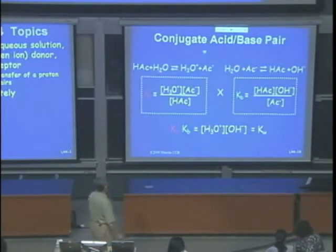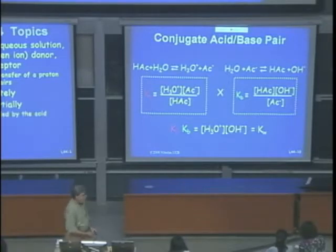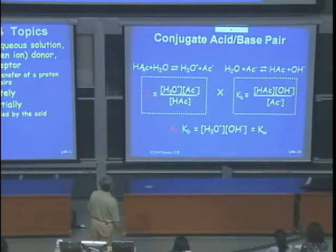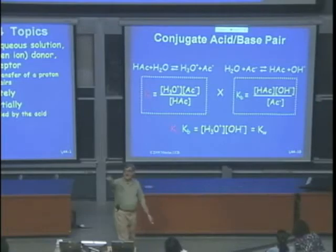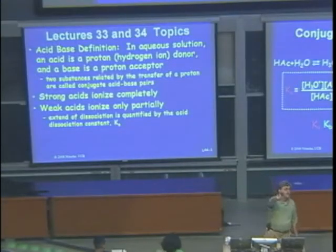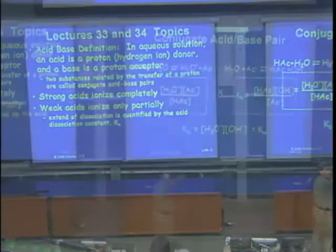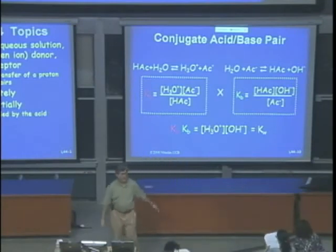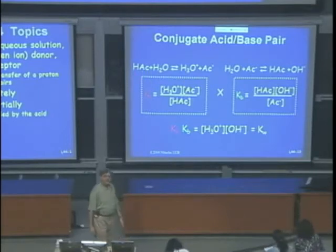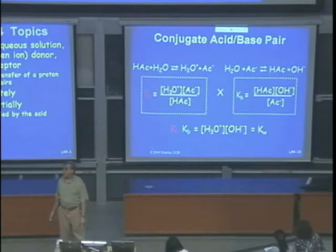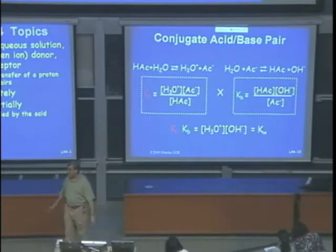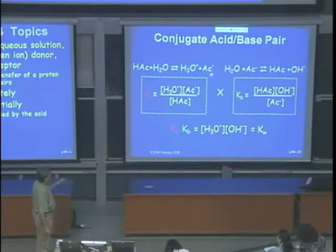Now talking about weak acids: I write HAc for acetic acid, which is a weak acid. For a weak acid, Ka is much smaller than one — around 10⁻⁵ or 10⁻⁴. If you put 0.1 molar weak acid in water, the equilibrium lies almost entirely on the left side because Ka is so small. You can write Ka = [H3O+][Ac⁻] / [HAc].